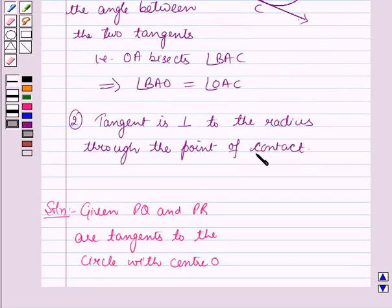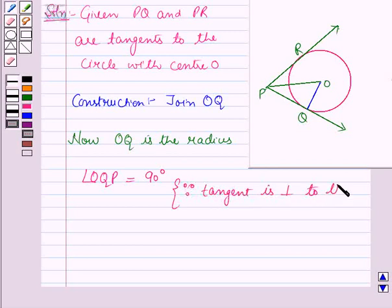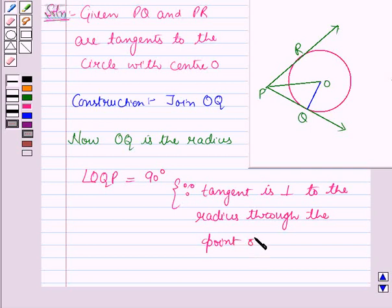Now using the second result which is given in the key idea, angle OQP is equal to 90 degrees because tangent is perpendicular to the radius through the point of contact. As OQ is the radius and PQ is the tangent and Q is the point of contact, therefore using this result angle OQP is equal to 90 degrees.